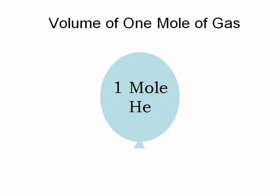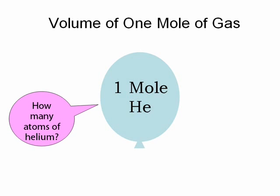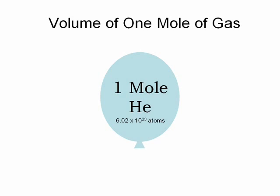Our discussion here is only going to apply to things that are gases. So let's say I had a balloon filled with helium gas, and if I had one mole of helium, I wonder what its volume would be. First, as a quick review — how many atoms do we have if it's one mole? That's right: 6.02 times 10 to the 23rd atoms of helium are in that balloon.